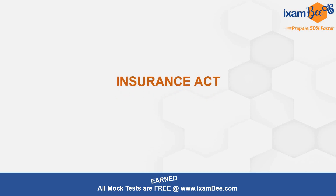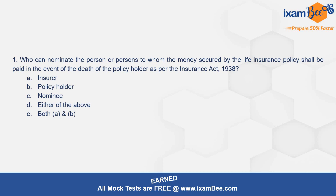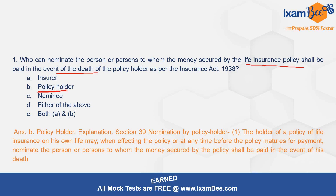Moving ahead with today's discussion on the Insurance Act. Our first question is: who can nominate a person to whom the money secured by a life insurance policy shall be paid in the event of death of the policy holder? The correct option is the policy holder. This is covered under Section 39 of the Insurance Act — nomination by policy holder — which states that the policy holder may, while effecting the policy or at any time before the policy matures for payment, nominate a person to whom the money shall be paid in the event of his death.